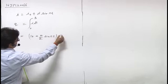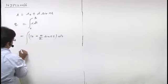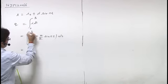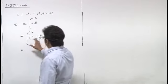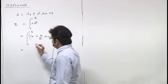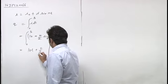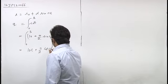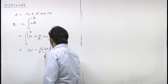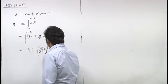dt from 0 to 3. Integrating 10 plus π/2 sin πt dt gives 10t plus π/2 times negative cos πt upon π, from 0 to 3.